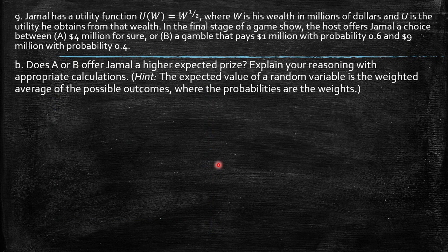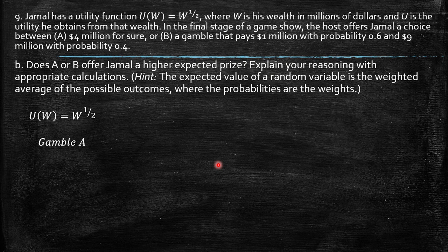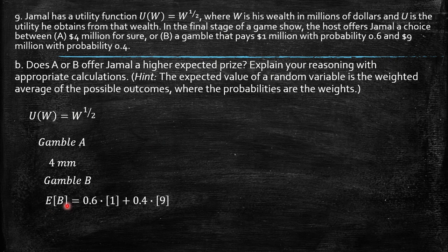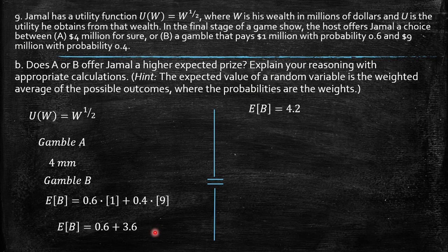Does option A or B offer Jamal a higher expected payoff? Gamble A pays 4 million for sure. Gamble B pays 1 million with probability 0.6 and 9 million with probability 0.4. The expected value of gamble B is: 0.6 × 1 + 0.4 × 9 = 0.6 + 3.6 = 4.2 million. So gamble B offers the higher expected payoff.